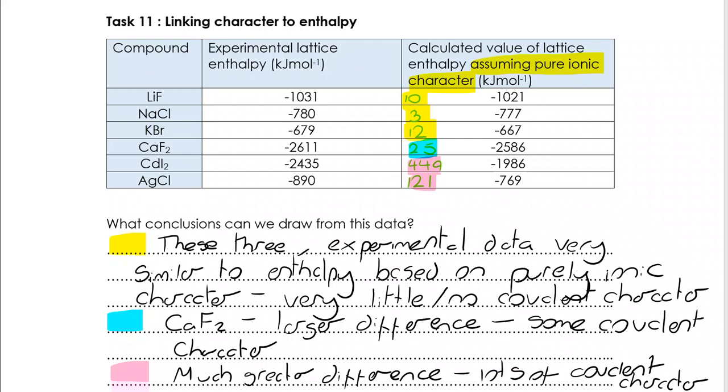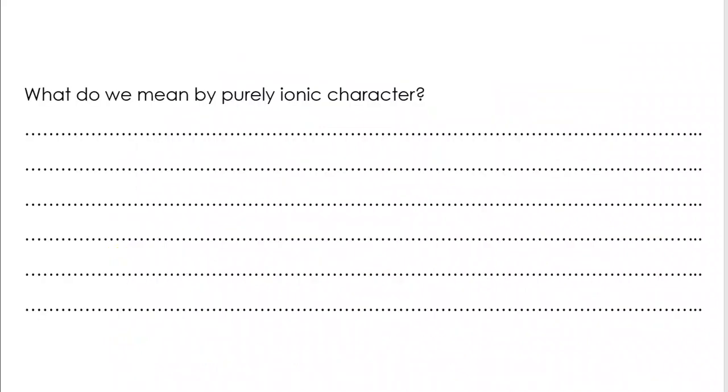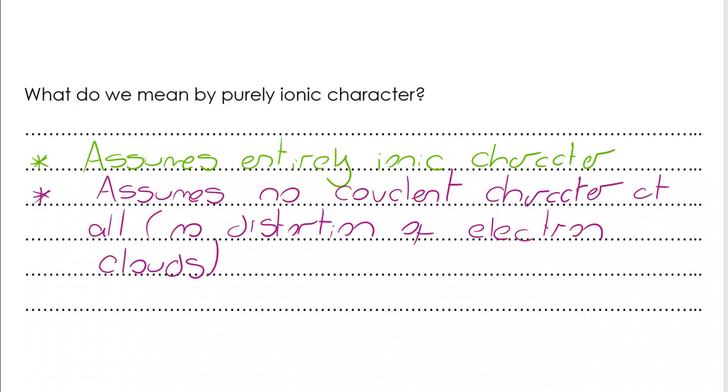So just for clarity, what do we mean by purely ionic character? Well, there are different ways of doing this. One, we're assuming that the character is entirely ionic. We are assuming that there is no covalent character at all. There is no distortion of the electron clouds. And what you may see when you're reading up on this yourselves is that can be spoken about as a single point charge. So that's what it means when we talk about that. No distortion.